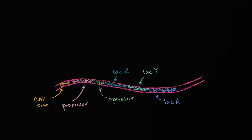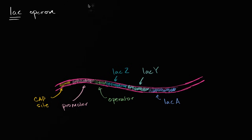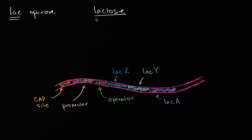We're now going to talk about one of the most famous operons, and this is the lac operon. It is part of E. coli's genome, and 'lac' refers to lactose, so you can imagine that it codes for genes involved in the metabolism of lactose.